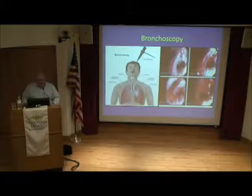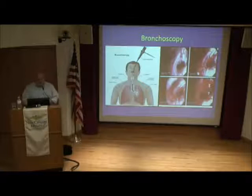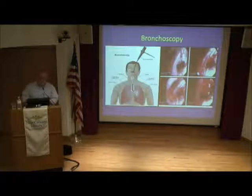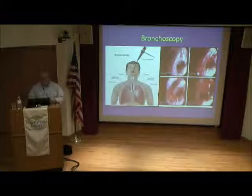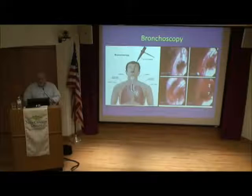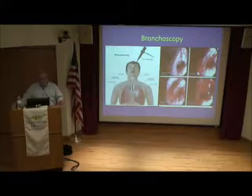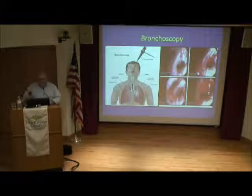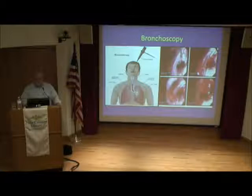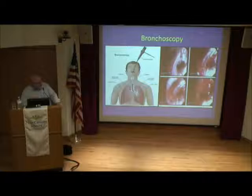Bronchoscopy uses a flexible tube going into the lung, developed in the 1960s and 70s almost exclusively in Japan. All the major bronchoscope manufacturers are old Japanese camera companies: Olympus has about 90% of the market, Pentax is another, and Fuji is increasingly growing. As traditional camera sales declined—because everyone uses smartphones—these companies' medical device divisions became their most valuable component, keeping them viable. Bronchoscopy allows us to look into the lung and see what's going on.